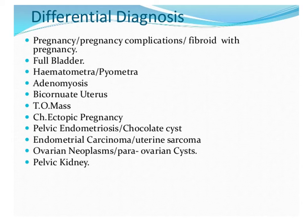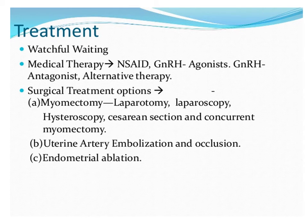Endometrial carcinoma — patient age is important, as it is common in those close to or past menopause, whereas fibroids are a problem of the reproductive age group. Ovarian neoplasms, paraovarian cysts, and a pelvic kidney due to abnormality in urogenital tract development can also present as a pelvic mass and must be differentiated from fibroid.